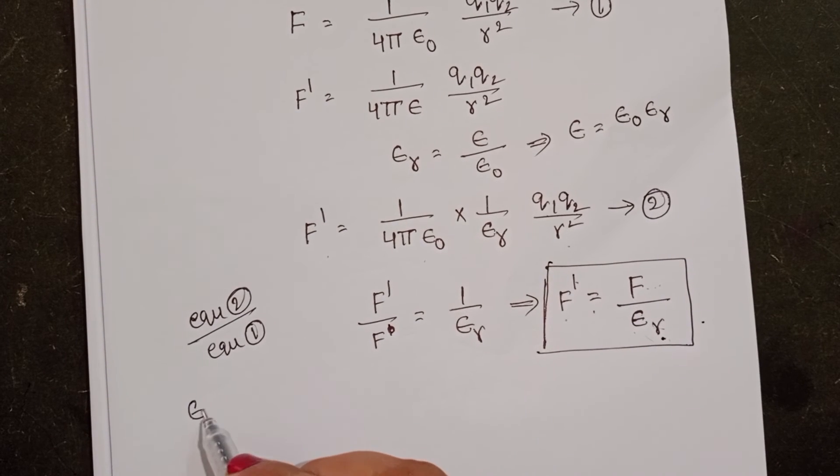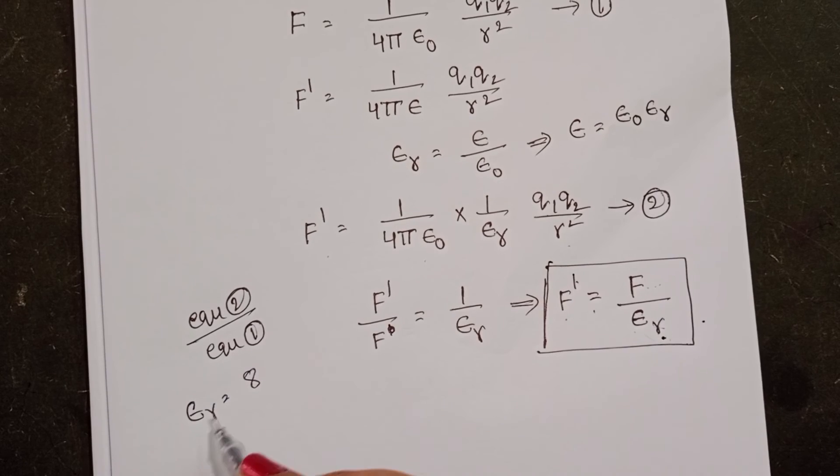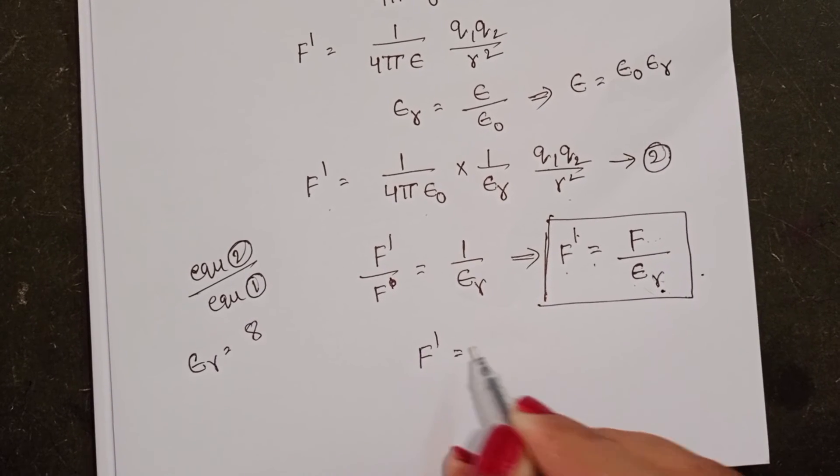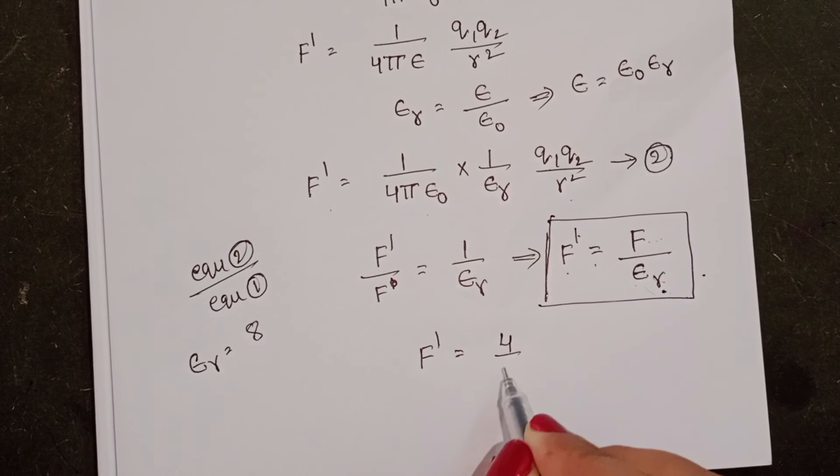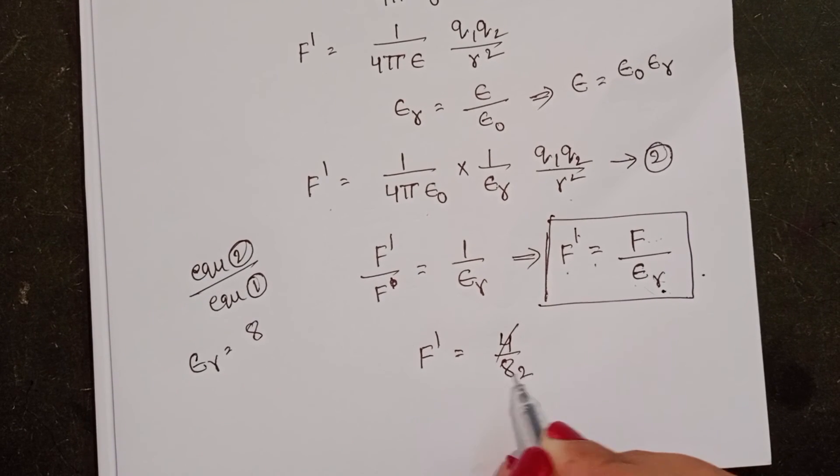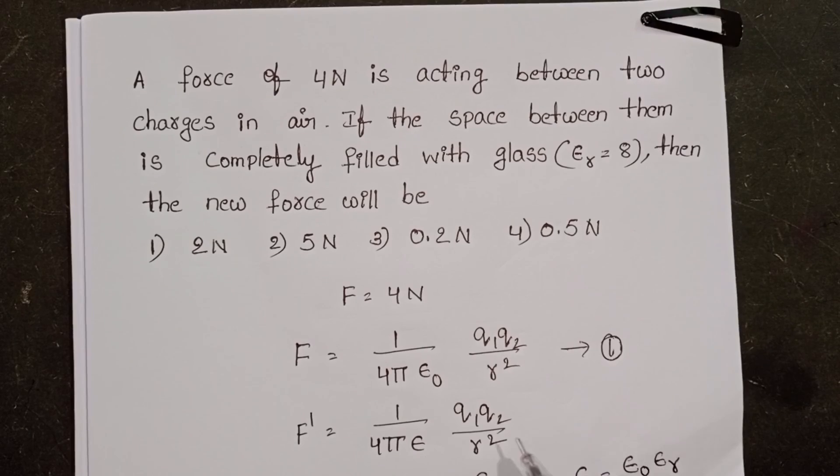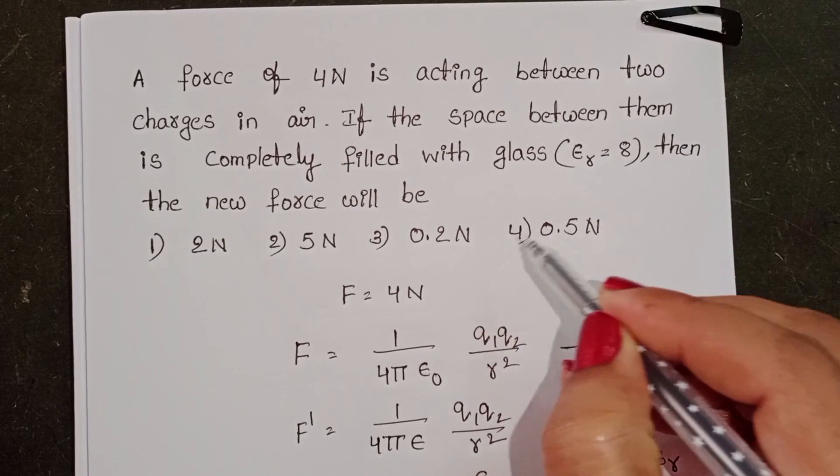Here epsilon r is equals to 8 and force equals to 4 newton. Then f dash equals to 4 by 8, which is 1 by 2, equals to 0.5 newton. Then the new force becomes 0.5 newton. Fourth option is correct.